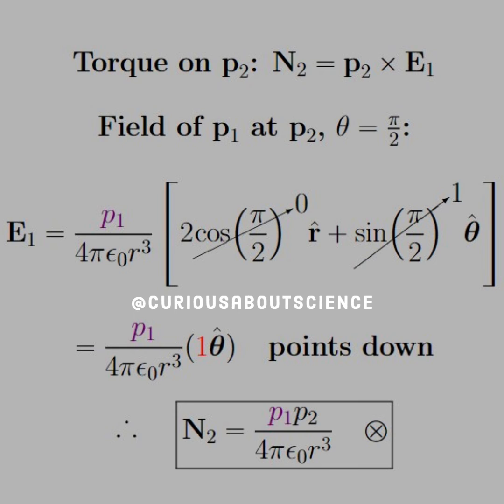Plug that into the electric field of a dipole and we see that we have P1 over 4 pi epsilon naught R cubed times 1 theta hat, which points downwards. Note that this is a little different from what we just found on the other electric field.